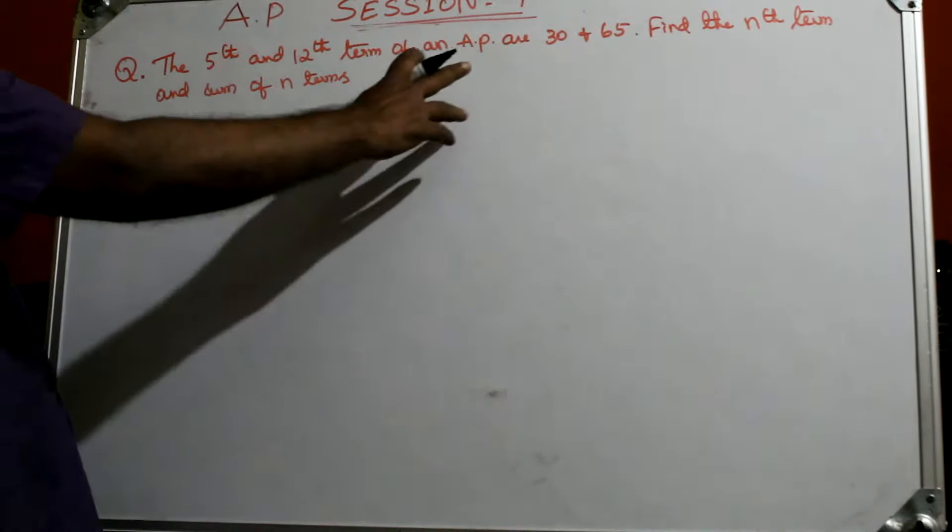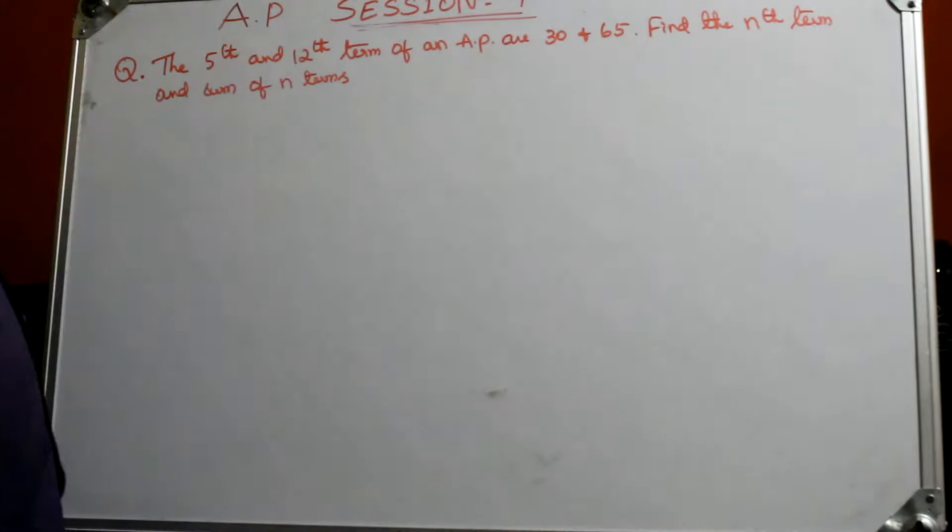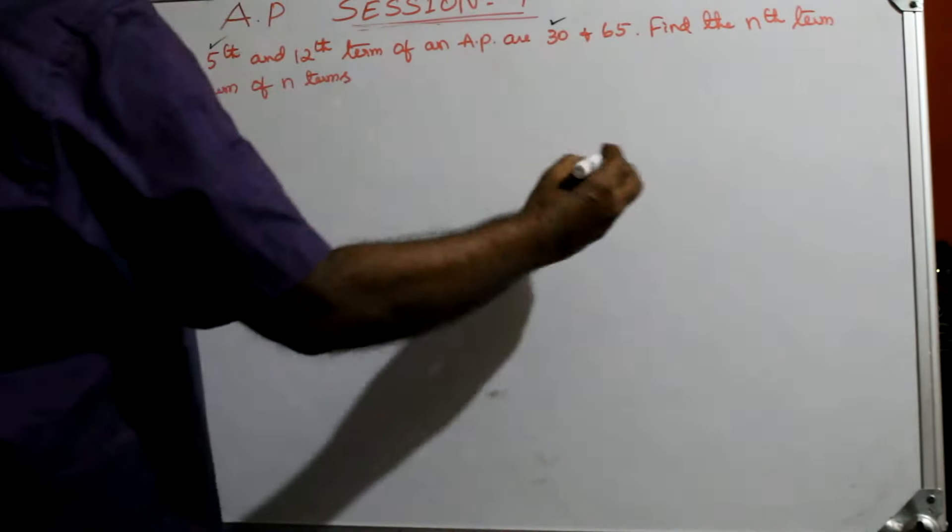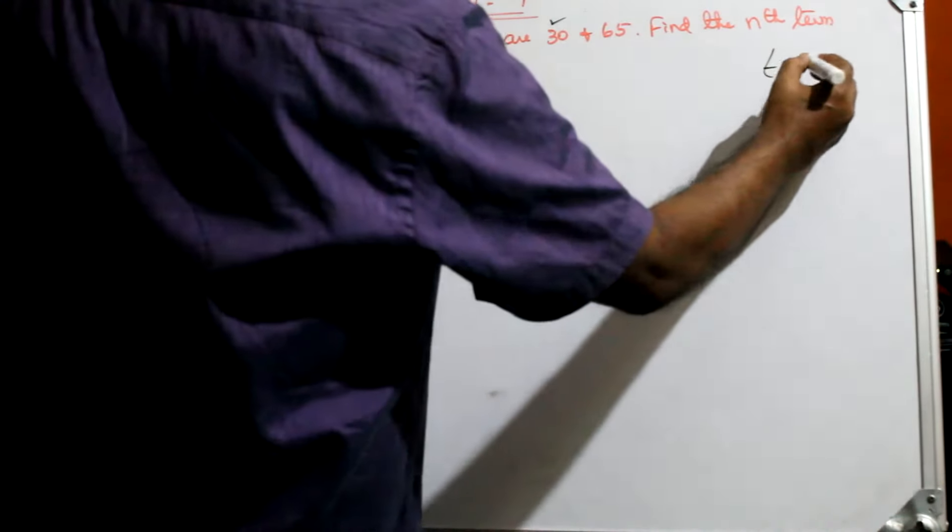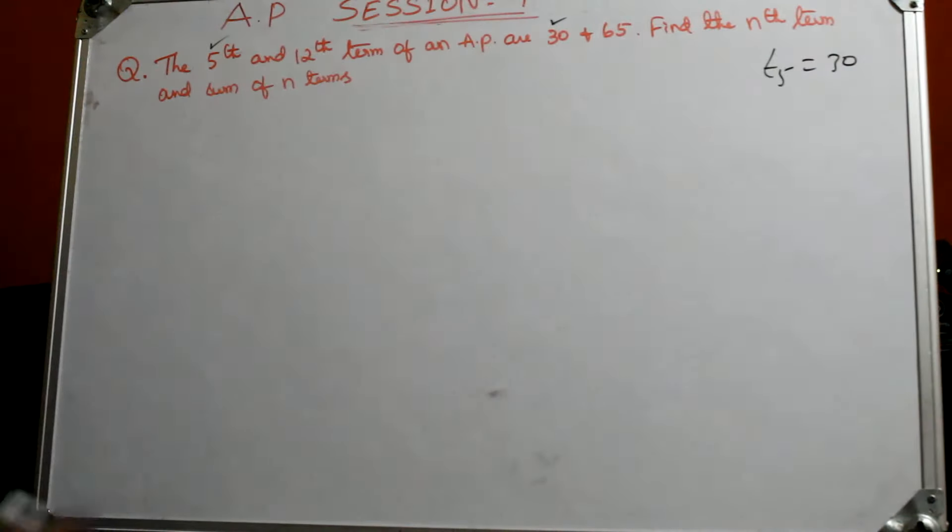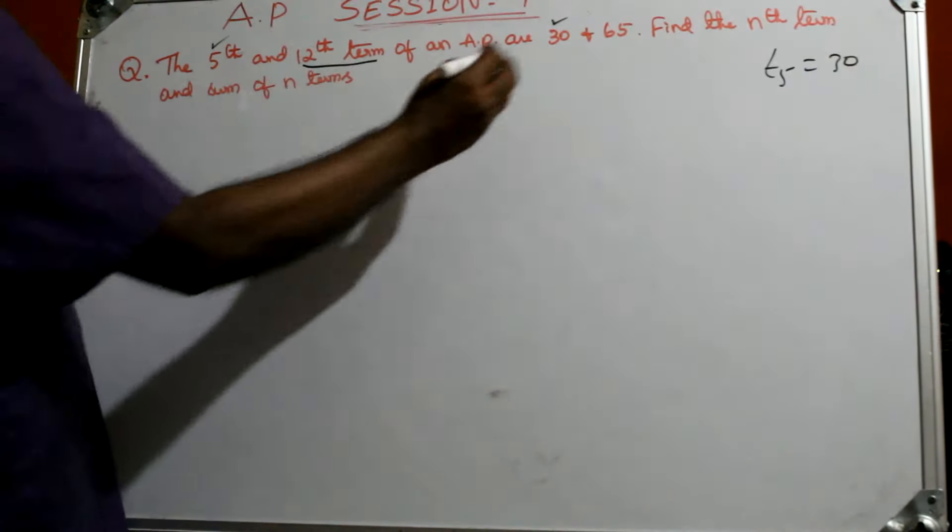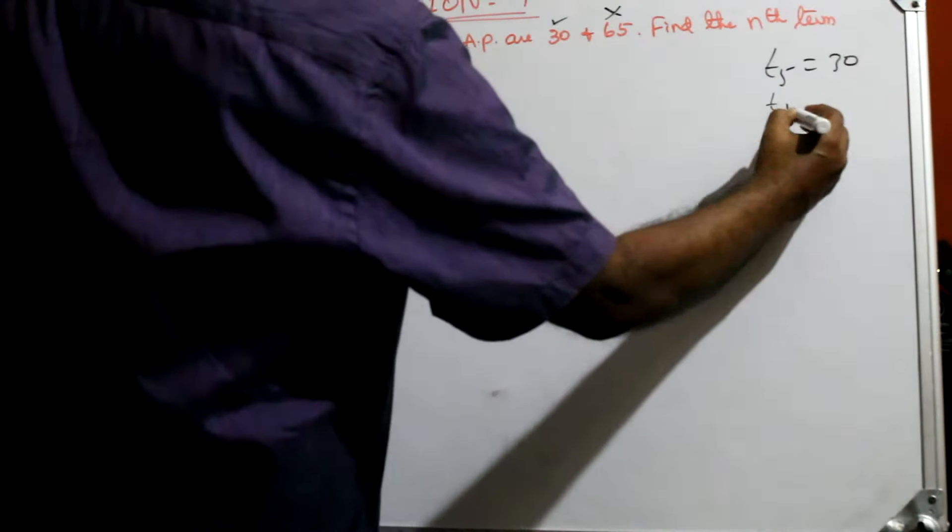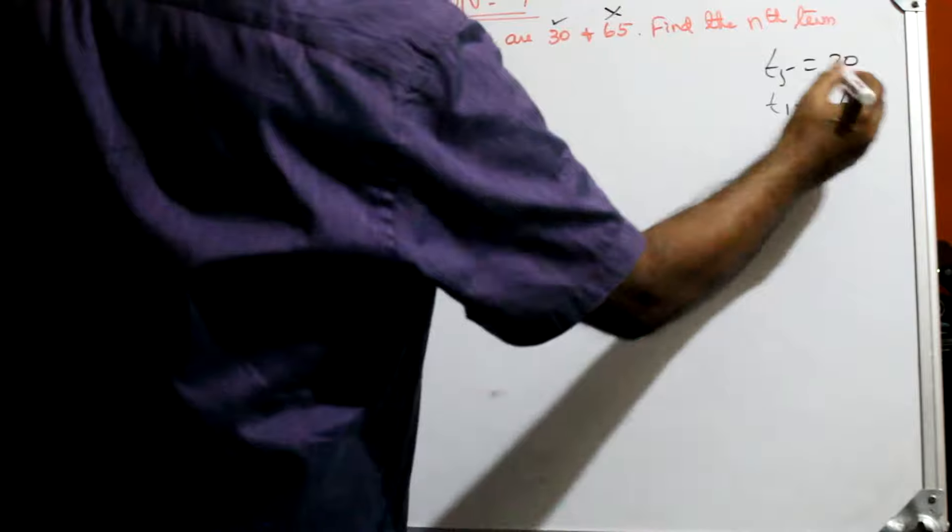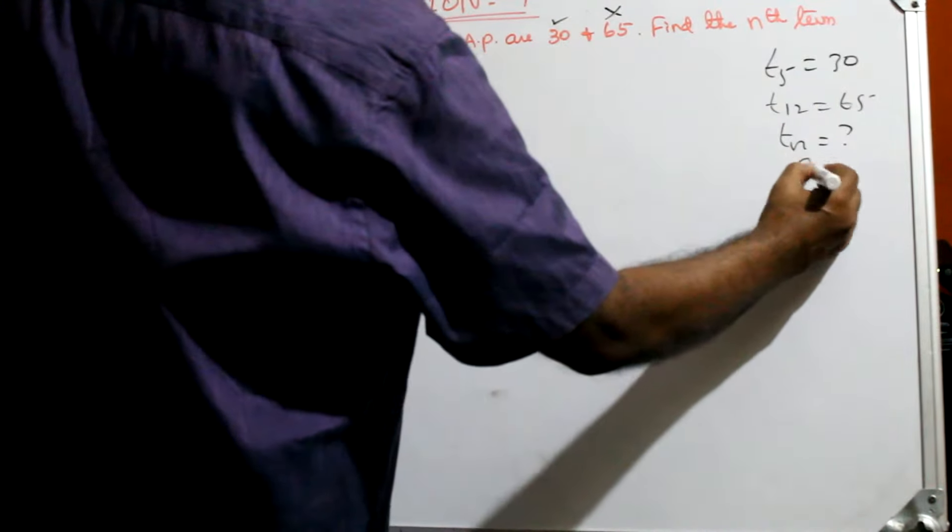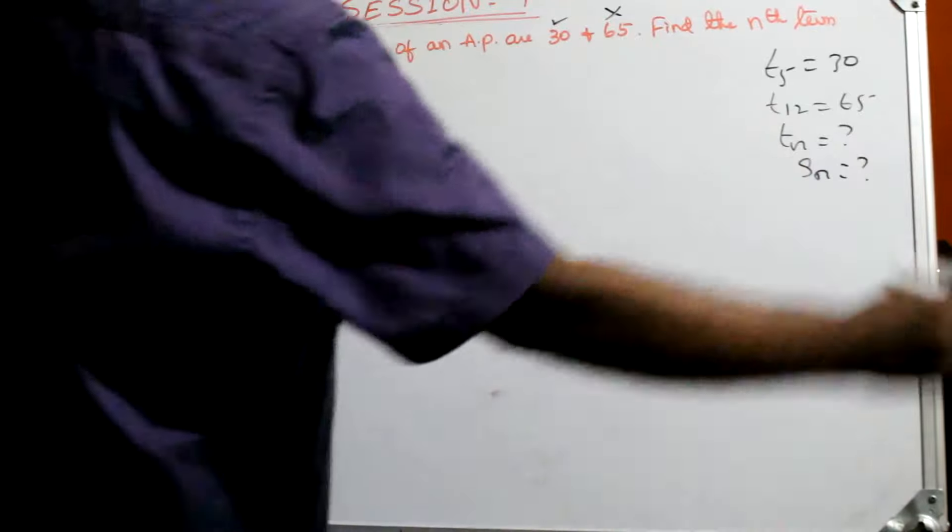The fifth term of an AP is 30 and 65. Find the nth term and the sum of n terms. Look here, the fifth term is given as 30. So you write T5 equal to 30. Also given, 12th term is 65. I put into false. T12 is equal to 65. Question is find the nth term. Tn equal to question mark. Sn equal to question mark.